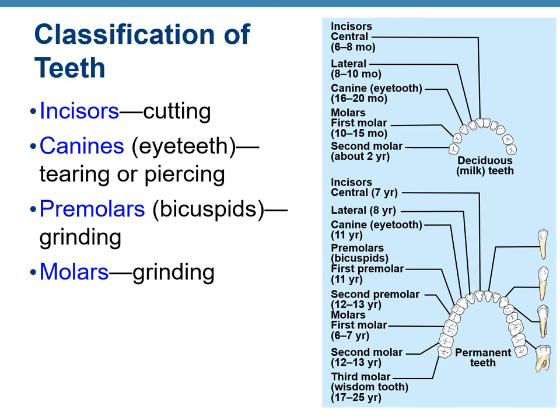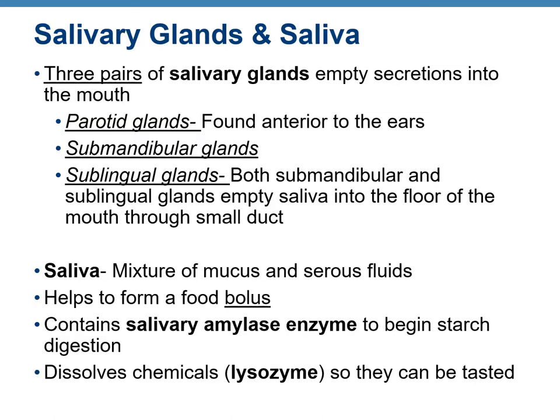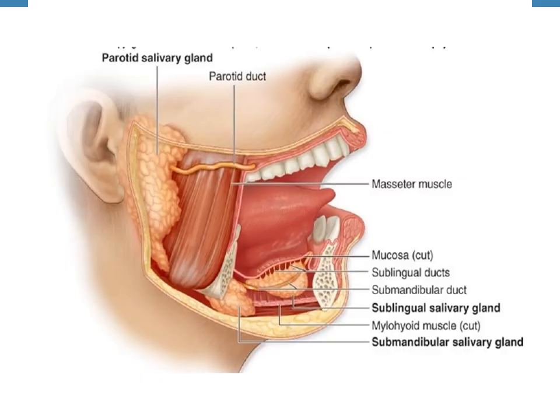There are three pairs of salivary glands in the oral cavity: the parotid glands found anterior to the ears, and the submandibular and sublingual glands, both of which empty saliva into the floor of the oral cavity through small ducts. Saliva is a mixture of mucus and serous fluids; when it mixes with food it forms a bolus, making swallowing easier. Saliva also contains salivary amylase for chemical digestion of starch and lysozyme for protection against bacteria.